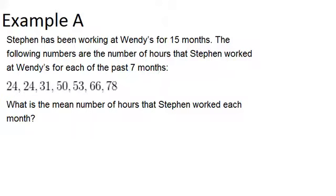In example A, it says Stephen has been working at Wendy's for 15 months. The following numbers are the number of hours that Stephen worked at Wendy's for each of the past 7 months. Then we have 7 numbers listed which represent the hours he worked each month.